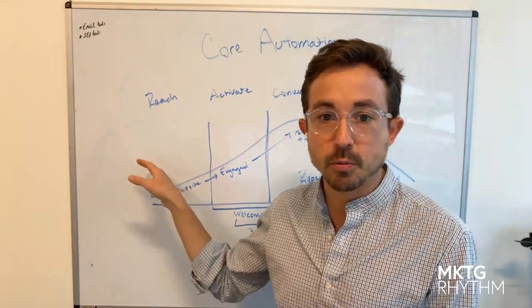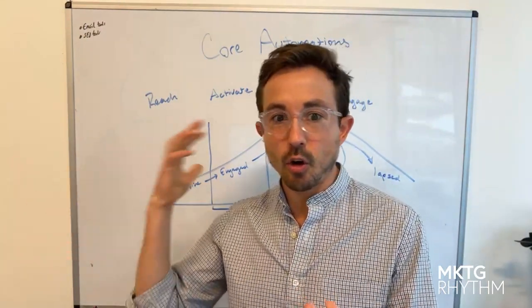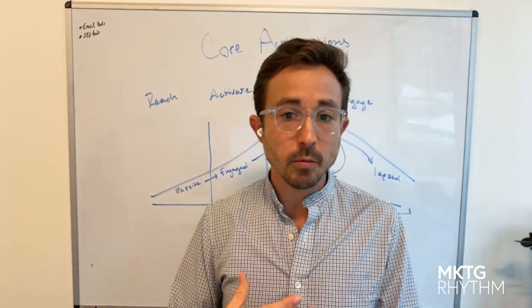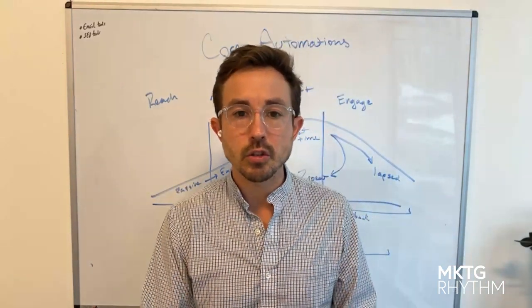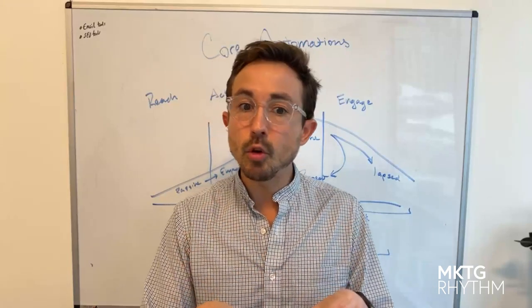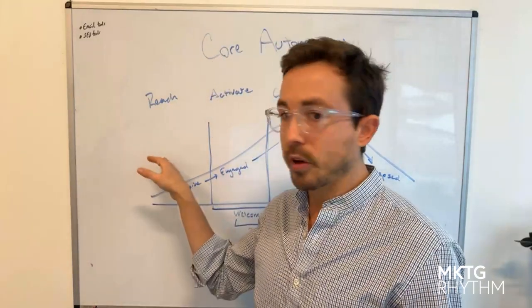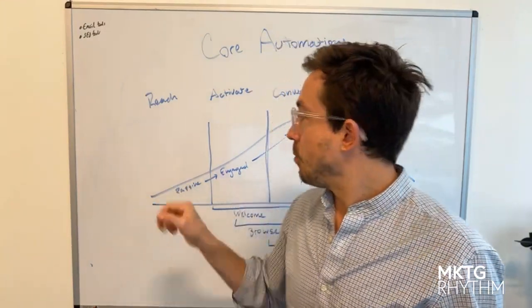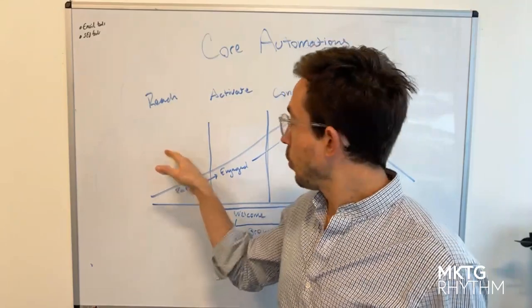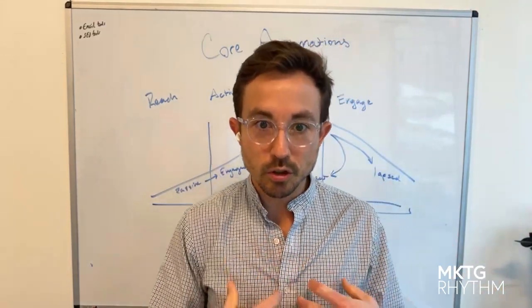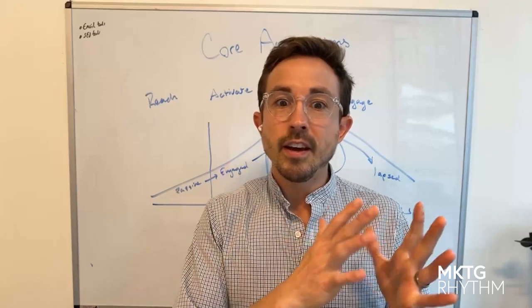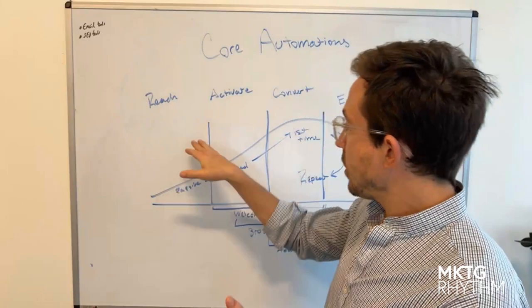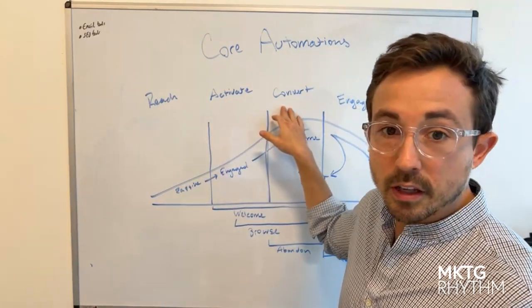That reach stage is the first touch point — they may be seeing an Instagram ad thinking, 'I suddenly need that,' or they may be realizing they have a problem and Googling for a solution, where your organic search or paid ads come in. Once they actually go to your site, you're working to activate and engage them — keeping them researching, moving them from problem-aware to solution-aware to product-aware, and gradually nurturing them along this journey until they can convert.